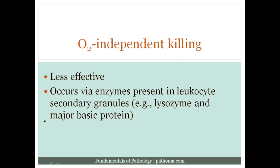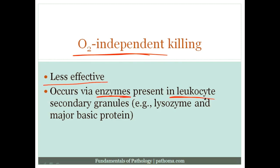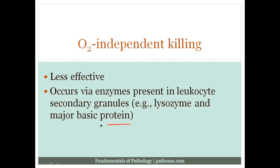The second way by which neutrophils can kill is O2-independent killing. It's less effective and occurs via enzymes present within the leukocyte — usually within the secondary granules. For example, lysozyme is an enzyme useful for destroying microbes. Major basic protein is an enzyme present in eosinophils, useful for destroying microbes as well. This is a little less effective than oxygen-dependent killing.